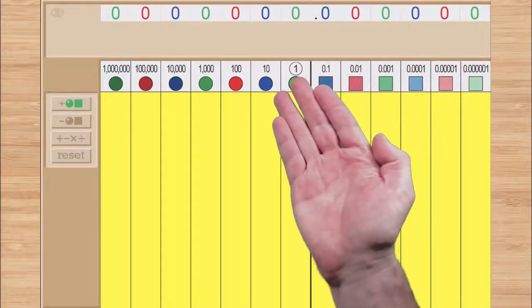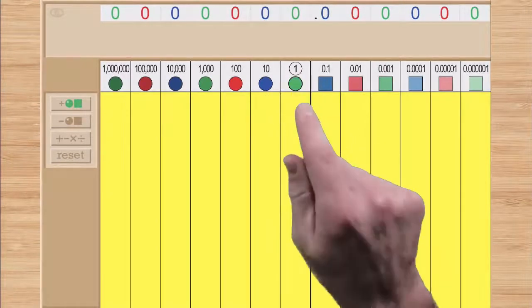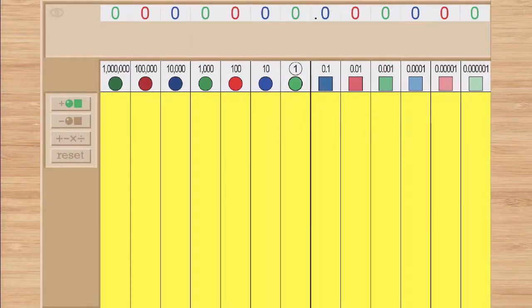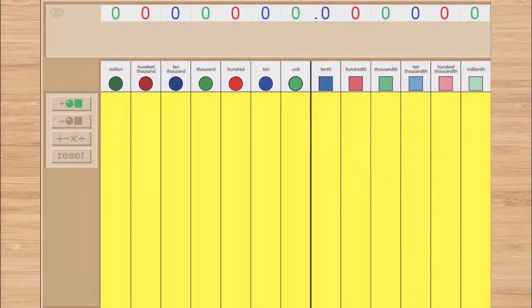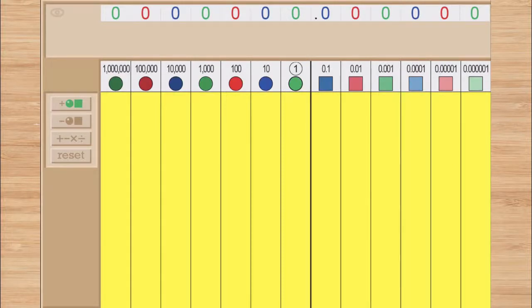One other useful feature in numeration mode is the ability to cycle the label strip. It will load with the decimal system labeled with number symbols, but a simple tap will cycle it to names, and another tap will switch it to fractions. One more tap will return it to number symbols.